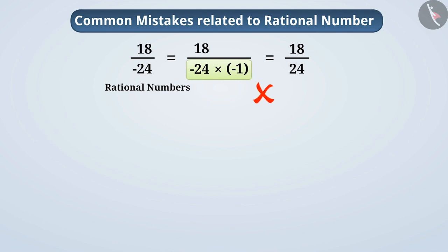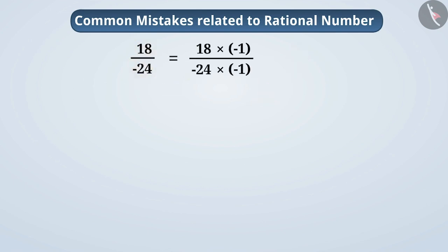The correct method of converting the denominator to a positive integer is to multiply both the numerator and denominator by minus 1. Since both the numerator and the denominator are being multiplied by the same number, the value of the number does not change, and the denominator becomes positive.